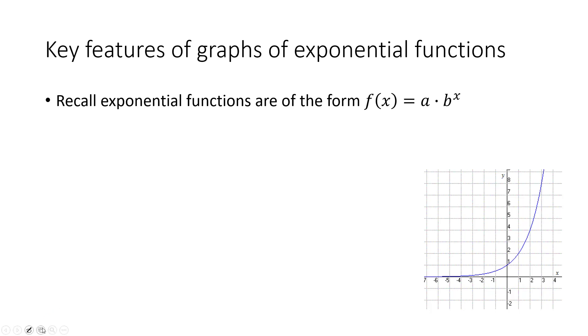First, to make these graphs, we need to recall that the form of an exponential function is f of x equals a times b to the x. The key point is the starting point. Remember, when x is zero, a is the starting point. So in this case, this point right here at the one is the starting point.